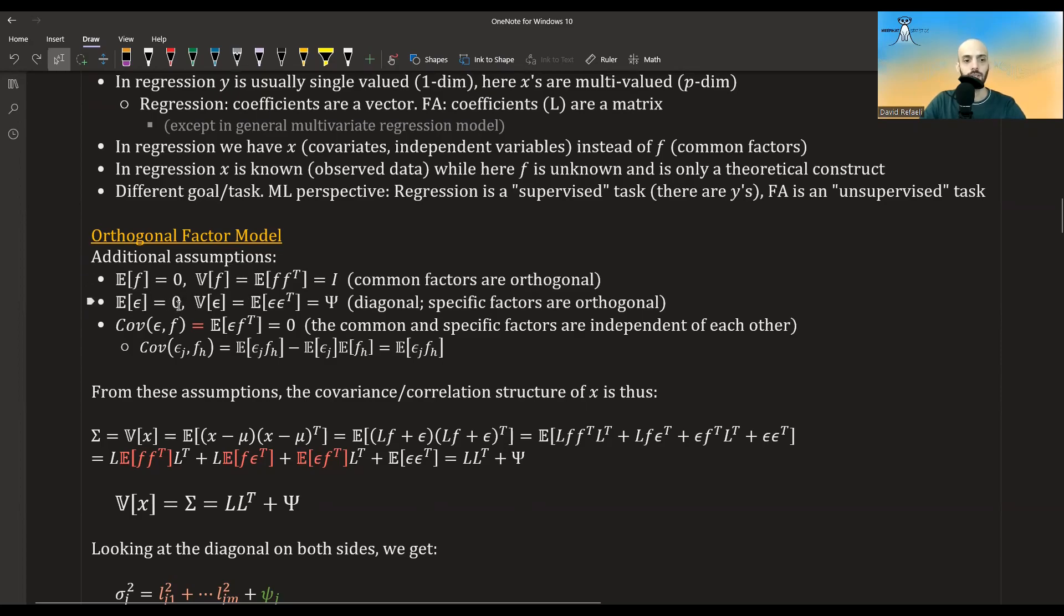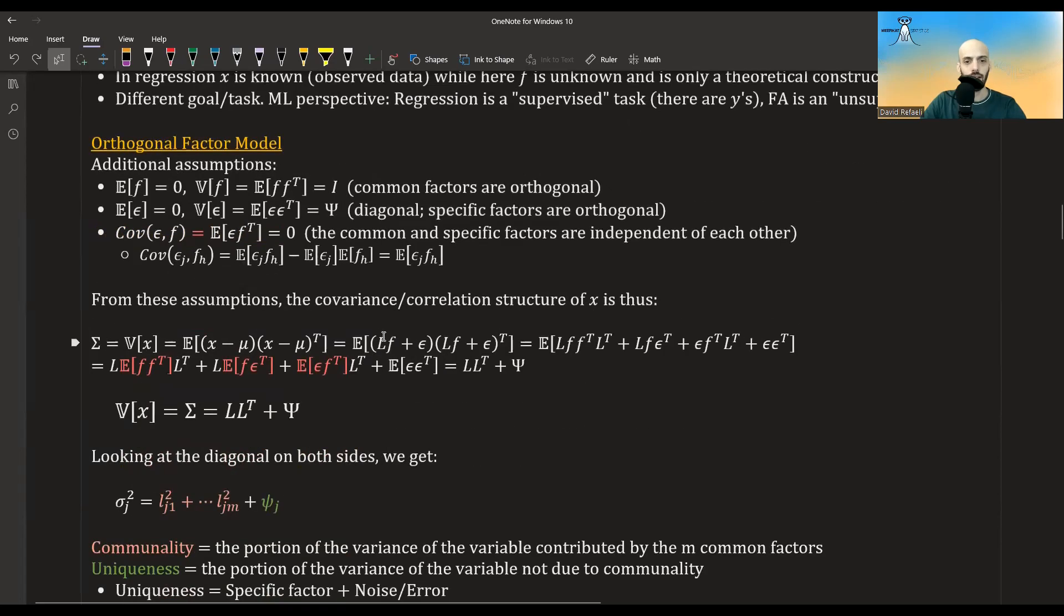Likewise, for the specific factors, we assume that their mean is zero and that their variance is a diagonal matrix. We could have also alternatively assumed that their covariance matrix is the identity and then add some coefficients to them. This is just two different ways of representing the same thing. Also, we assume that the covariance between the epsilon and the f is equal to zero, so the common and specific factors are independent of each other. The reason this equality holds is because it should have been this, but this is zero and this is zero, so it's just equal to this.